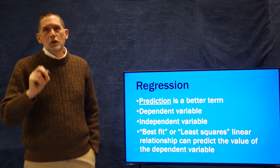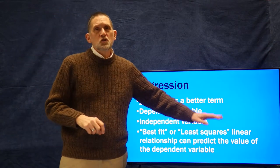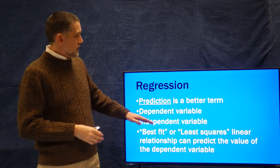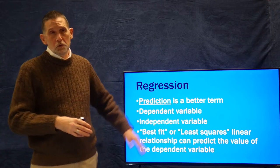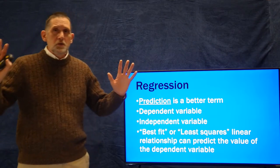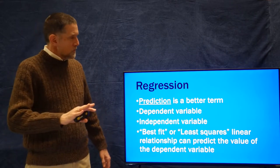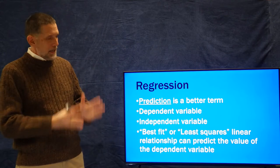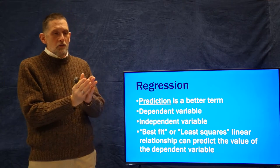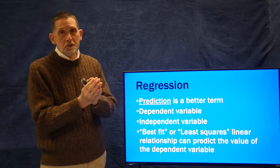What we're looking for in regression is the best fit — or the least squares — linear relationship between an independent variable and a dependent variable, or one or more of each depending on whether we're doing simple linear regression or multiple regression. Best fit, or least squares, means a line that runs through the cloud of points in a scatter plot with the minimum amount of squared distance — squared error — among all those points.